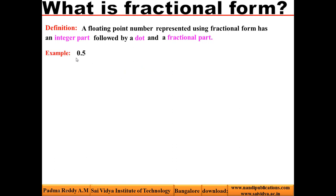For example: 0.5, -0.99, -0.6, -9.0, +2.0, etc. A fractional form has an integer part followed by a dot, followed by a fractional part.